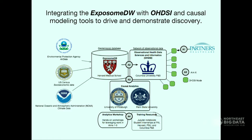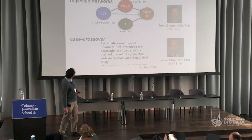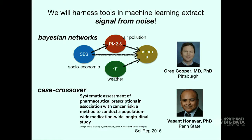Going back to the earlier talk, there was some discussion about moving away from associations to understanding causal mechanisms. From our perspective in healthcare, we're working with Vasant Hanavar and Greg Cooper at University of Pittsburgh and Penn State to build causal analytic tools. Greg has worked on a lot of causal search-type methods, and Vasant has done a lot of work in case-crossover analysis and more causal types of analysis for these data sets. We're hoping to work together to build best practices when looking at the association of environmental factors that affect disease.